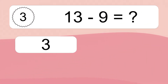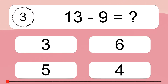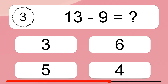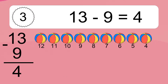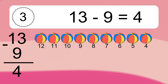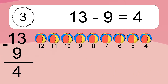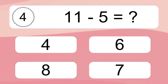13 minus 9 equals what? 13 minus 9 equals 4. Let's count it: 12, 11, 10, 9, 8, 7, 6, 5, 4.